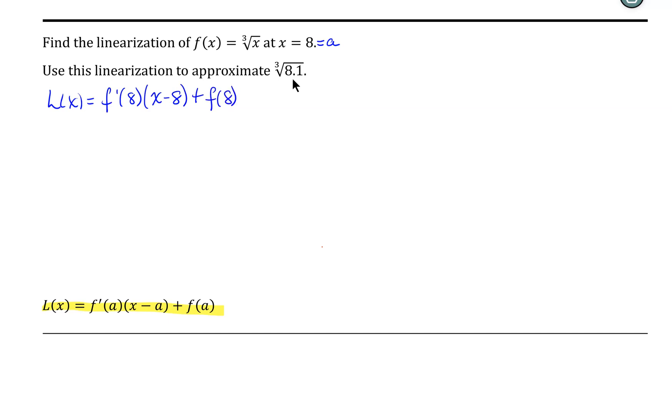Now this tells us what we need to know. We need to know what f prime at 8 is, and we also need to know what f at 8 is. Once we know those two quantities, we can then write our linearization.